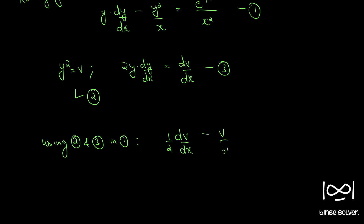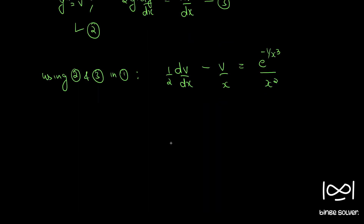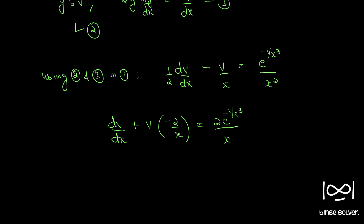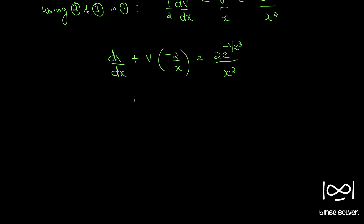So we get: minus v by x equal to e raised to minus 1 by x cubed divided by x squared. Multiplying throughout by 2, we have dv by dx plus v into minus 2 by x equal to 2 times e raised to minus 1 by x cubed divided by x squared. This is the standard form of a linear differential equation: dv by dx plus v times P equals Q, where P and Q are either constants or functions of x alone.